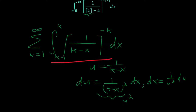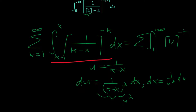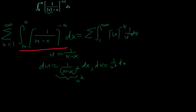We'll see how this transforms our bounds. Whenever we plug k into this expression, we get 1 over 0, so the upper bound becomes infinity. The lower bound: we plug in k minus 1 and get k minus k plus 1, which is just 1. Inside our ceiling function we just have u, and then we still have minus k, and then 1 over u squared du. So now we can evaluate the ceiling function by expressing it in terms of a sum again.